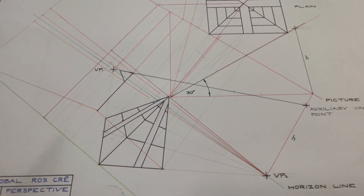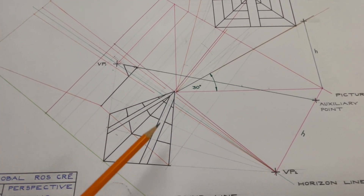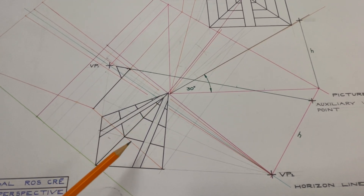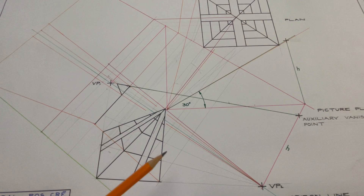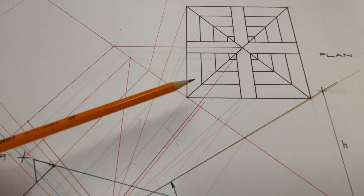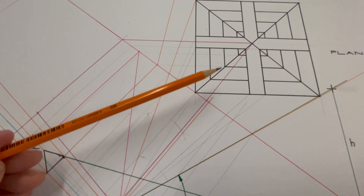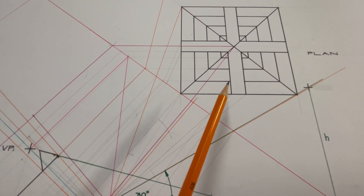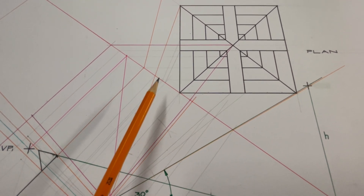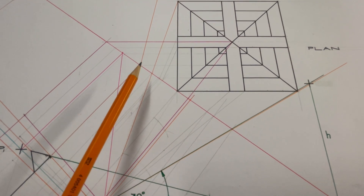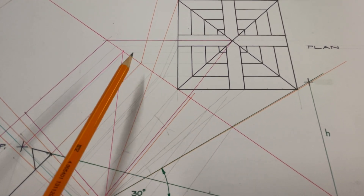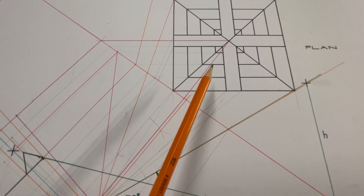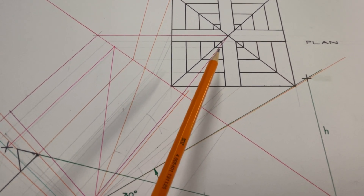Once that is done, we just have to get these three different lines on the other face. These lines are not on the picture plane, so we bring each of them onto the picture plane — this line, this line, and this line. This one has a height of 30, this one has a height of 60, and this one has a height of 90.